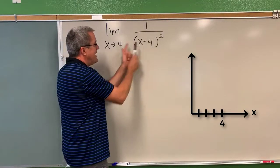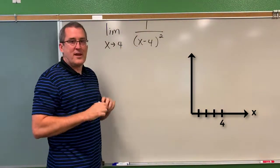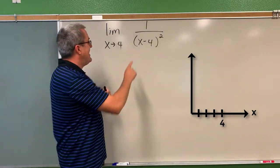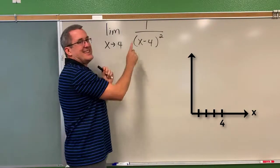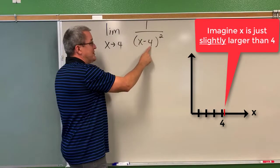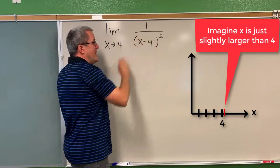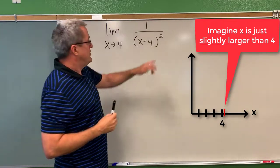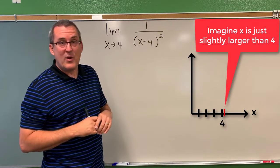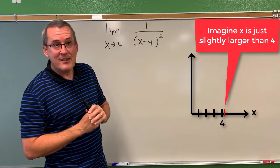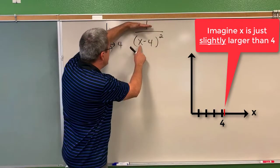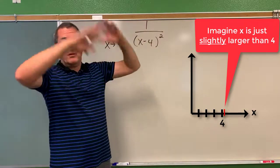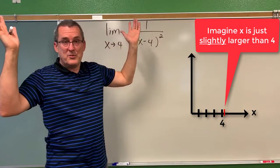Can you imagine this? x is nearby but not equal to 4, like 4.0000001. If you take a number just slightly bigger than 4 and subtract 4, you get a quantity that's really, really tiny. Square that really tiny quantity and it makes it even smaller. And so as x gets nearby to 4, 1 divided by that result would just blow up to a really, really huge number.